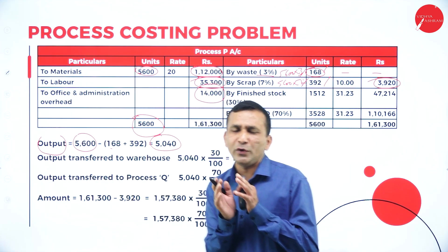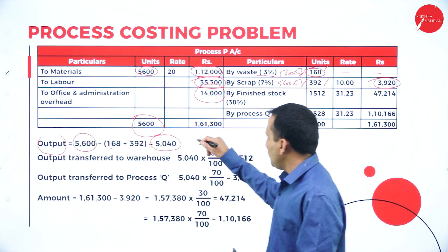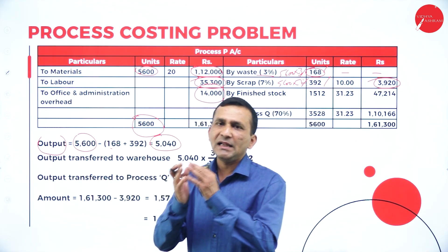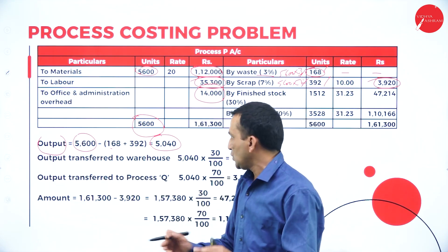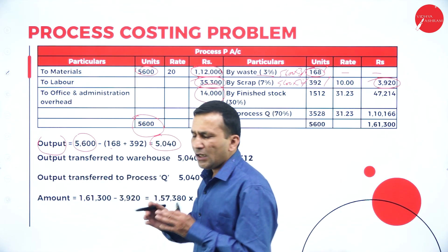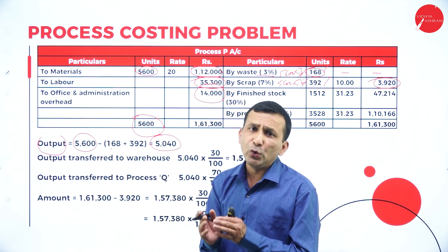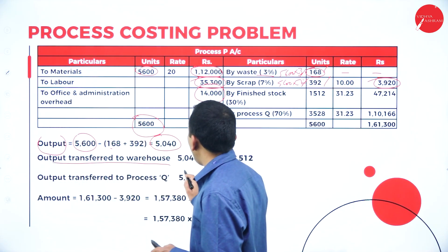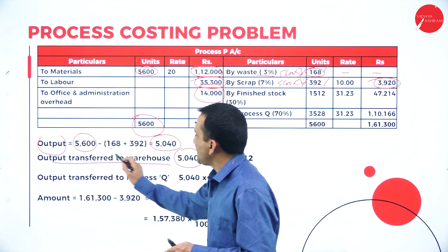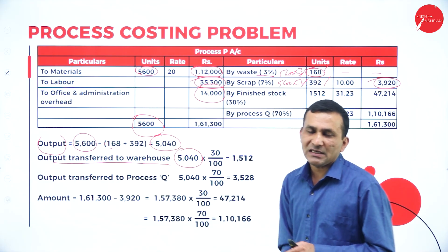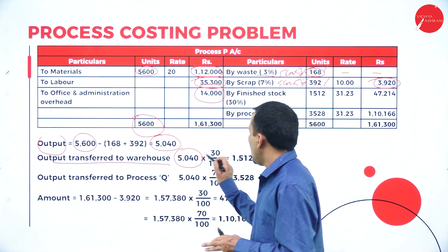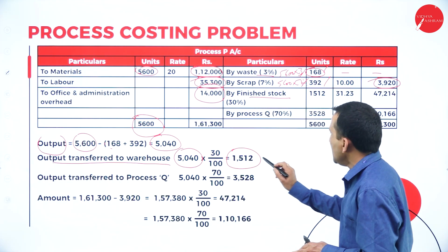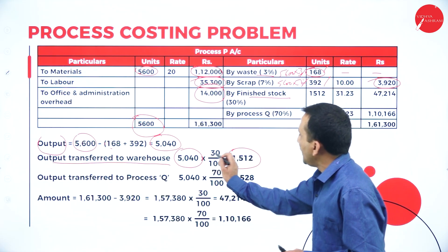From the 5,040 units, 70 percent goes to the next process (Process Q) and 30 percent goes to finished stock. Calculating 30 percent of 5,040: 1,512 units go to the finished stock warehouse. We now need to find the rate per ton for these outputs.